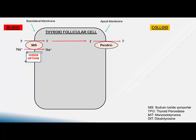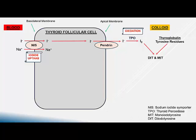The iodide ion now needs to be oxidized to iodine before it can iodinate tyrosine residues. Near the apical surface in the colloid, there is an enzyme called thyroid peroxidase or TPO, which oxidizes iodide into iodine — a process called oxidation. The iodine molecule then combines with tyrosine residues in the thyroglobulin to form either monoiodotyrosine (MIT) or diiodotyrosine (DIT).